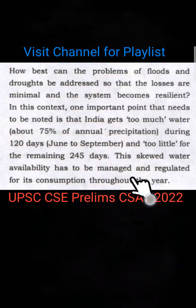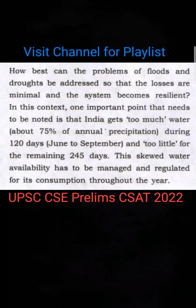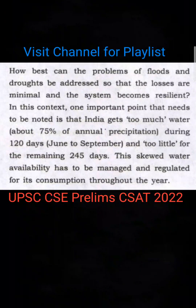This skewed water availability needs to be managed and regulated so that water can be consumed throughout the year. If this problem is solved, losses from floods and droughts can be minimized.